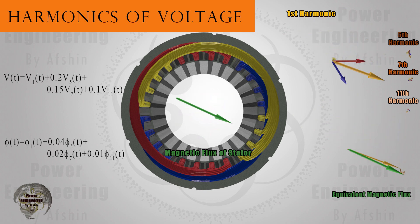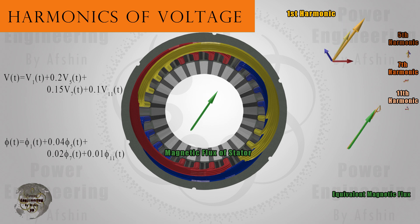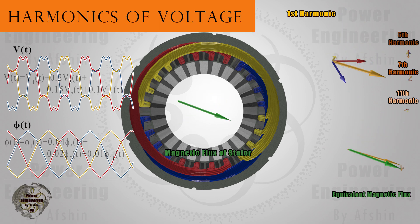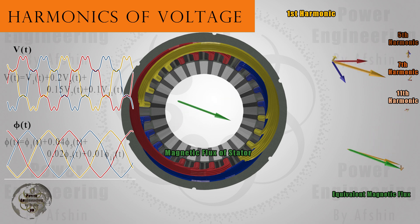We assume that the three phase voltages include harmonics of 5, 7, and 11. On the left side, you can observe the magnitudes of these harmonics. Each harmonic creates a rotational magnetic field with a frequency proportional to that harmonic. Although their amplitudes are small, they alter the rotational magnetic field.